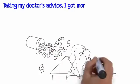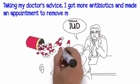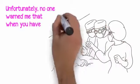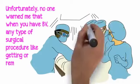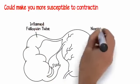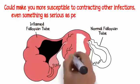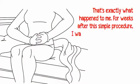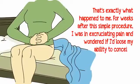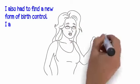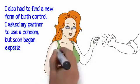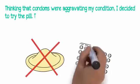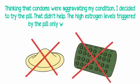Taking my doctor's advice, I got more antibiotics and made an appointment to remove my IUD, hoping that would stop infections. Unfortunately, no one warned me that when you have BV, any type of surgical procedure like getting or removing an IUD could make you more susceptible to contracting other infections, even something as serious as pelvic inflammatory disease. That's exactly what happened to me. I was in excruciating pain and wondered if I'd lose my ability to conceive. Thinking that condoms were aggravating my condition, I decided to try the pill. That didn't help—the high estrogen levels triggered by the pill only worsened my BV symptoms.